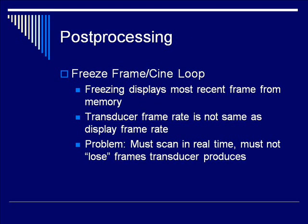That's really all that has to be done in pre-processing. Now let's talk about what has to be done in post-processing. The really important one you use all the time is Freeze Frame and CineLoop. Whenever you hit the Freeze button, we display the most recent frame that's been stored from memory. And whenever you scroll back and forth through those most recent images, you're scrolling through the CineLoop.